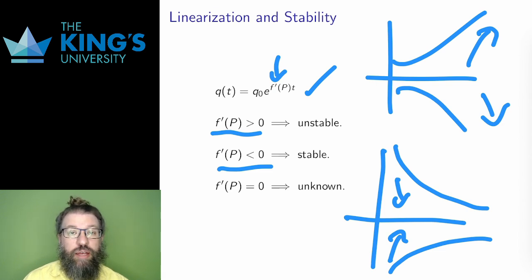Finally, if F prime of capital P is zero, then this is just a zero function and the linear approximation doesn't really say anything.